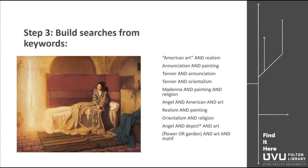I'm using quotation marks when I want a specific phrase, like "American art," which tells the database I want those two words to appear in that order with no words between them. Without quotes, searching American and art is broader and may bring back unrelated results. I also have an asterisk, which tells the database I care how the word begins but not how it ends. So depict* will return results for depict, depicts, depictions, and depicting. Be careful to cut off the word late enough to get extra endings but not so early you get unwanted results — for example, teen* gets teen, teens, and teenager, but just r* would match nearly everything.